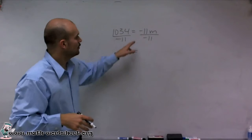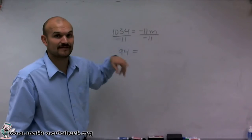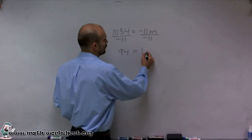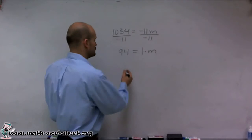Now, what's going to happen on the right side? Well, negative 11 divided by negative 11. Negative 11 divides into negative 11 one time. So therefore, I have 1 times m. Now, 1 times m is going to leave us with m.